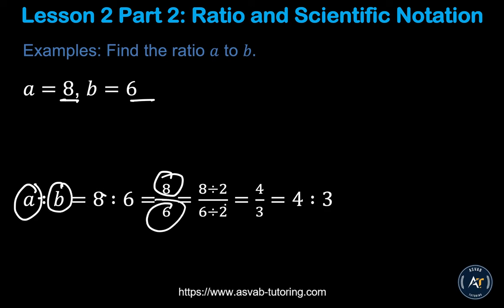A ratio should always be in simplest form. You have to simplify the fraction. If you divide both sides by 2, you get 4 over 3, so the ratio is 4 ratio 3.